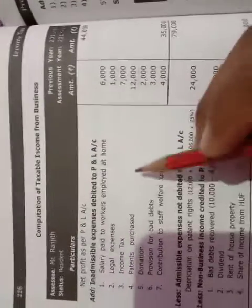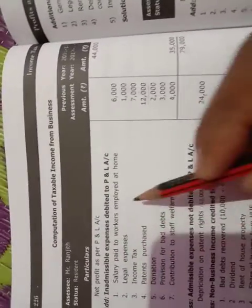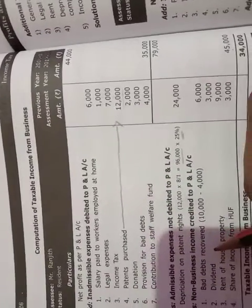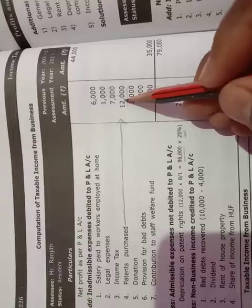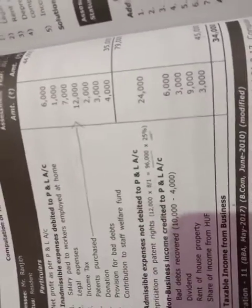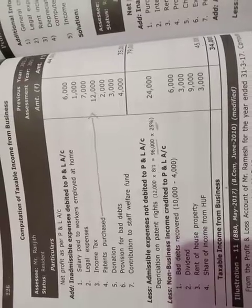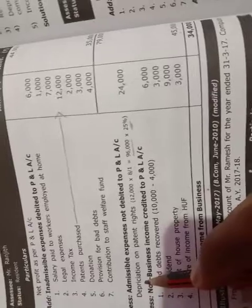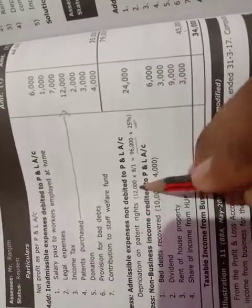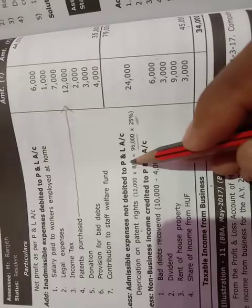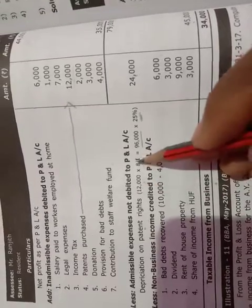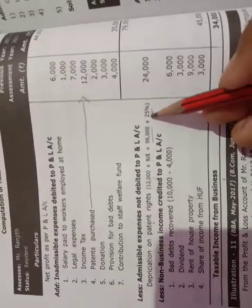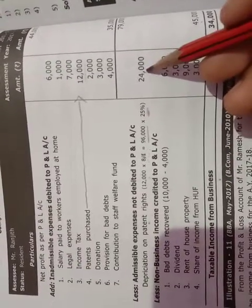Once again — for patent purchased, one time we make it inadmissible: 12,000. This is the part value — it is a capital asset. We need to calculate depreciation on it. Depreciation on patents: 12,000 × 8/1 = 96,000 full patents value × 25% standard depreciation rate = 24,000 depreciation, which is admissible.